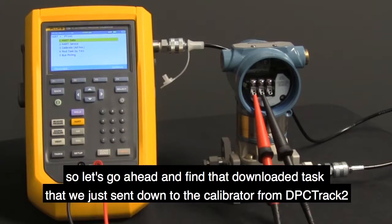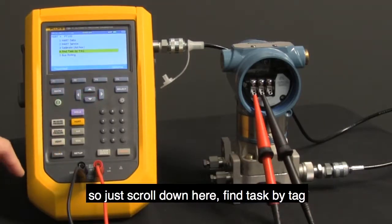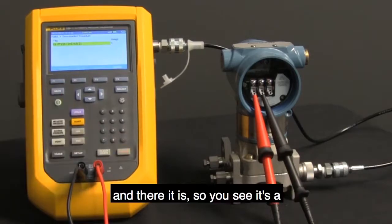So let's go ahead and find that downloaded task that we just sent down to the calibrator from DPC Track 2. So I'll just scroll down here. Find task by tag. And there it is.